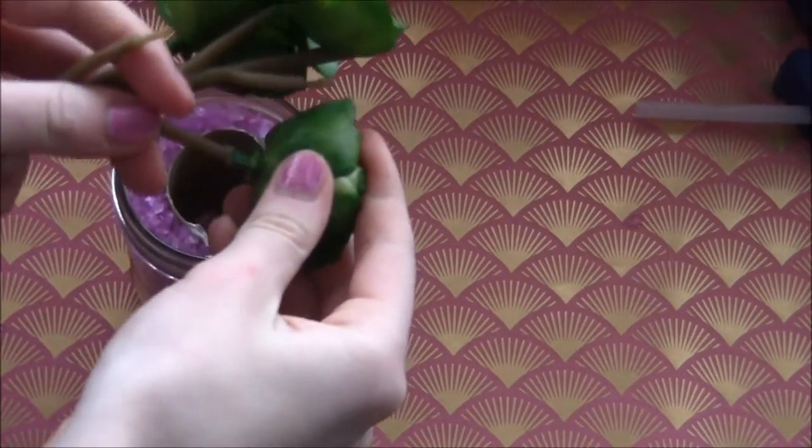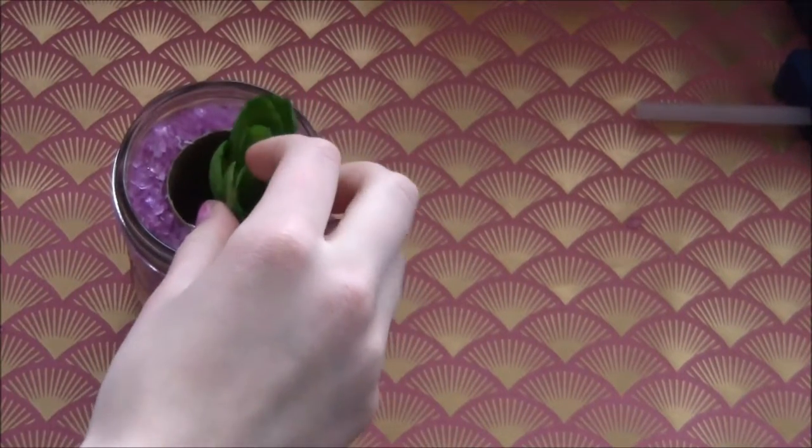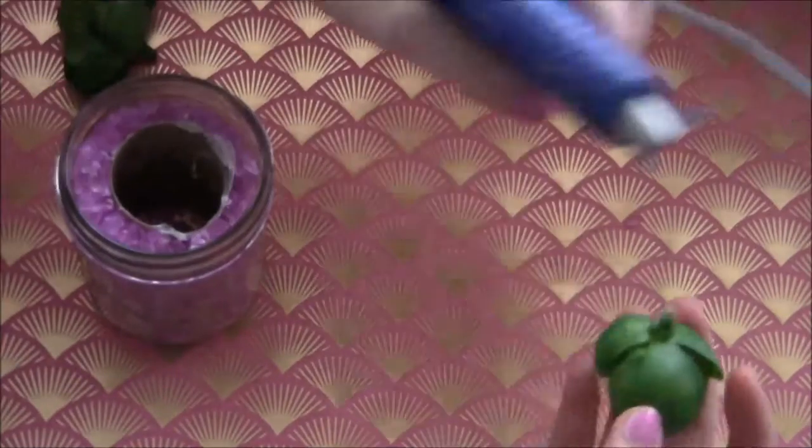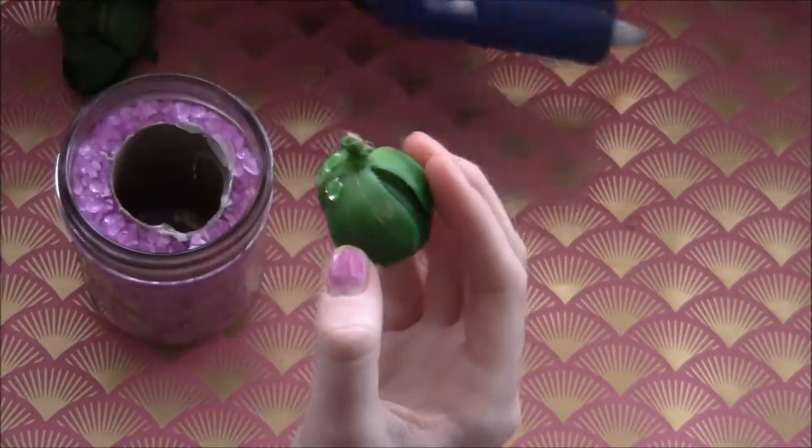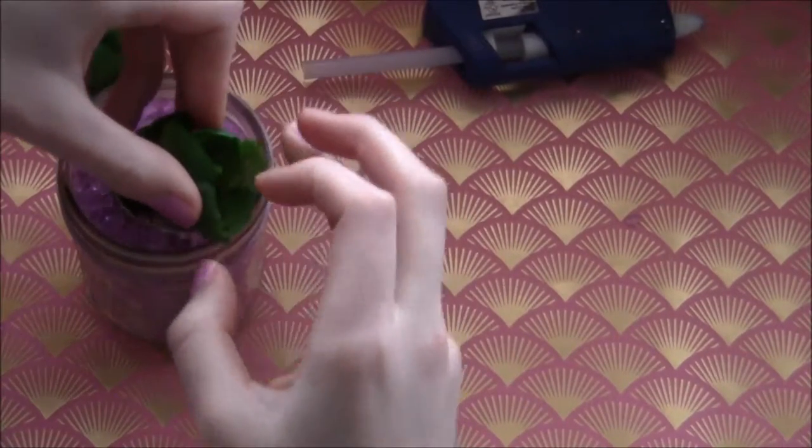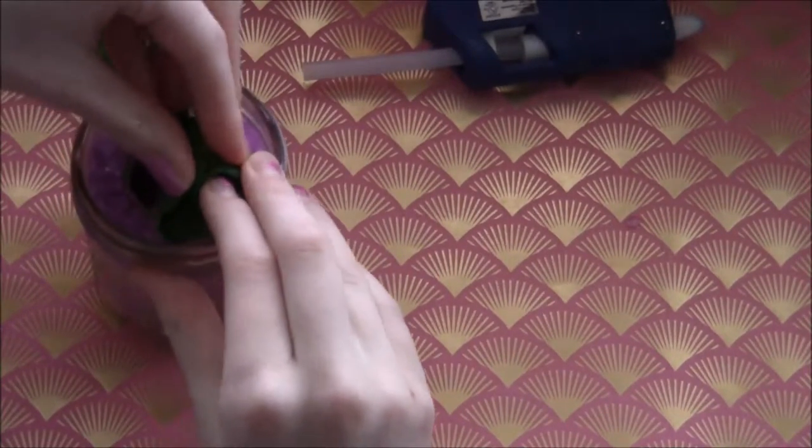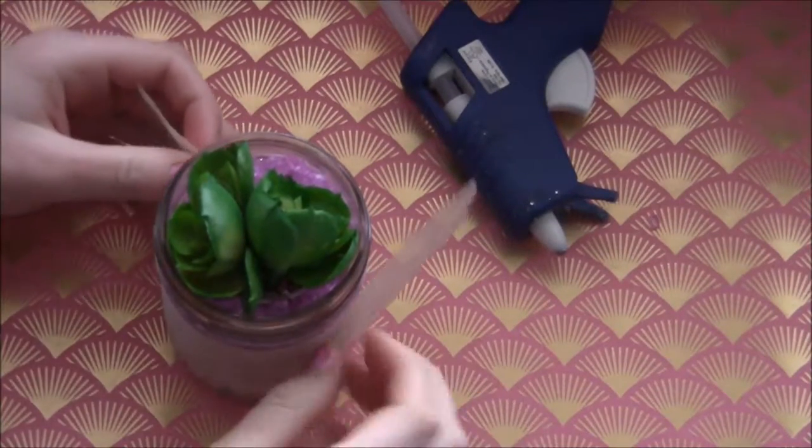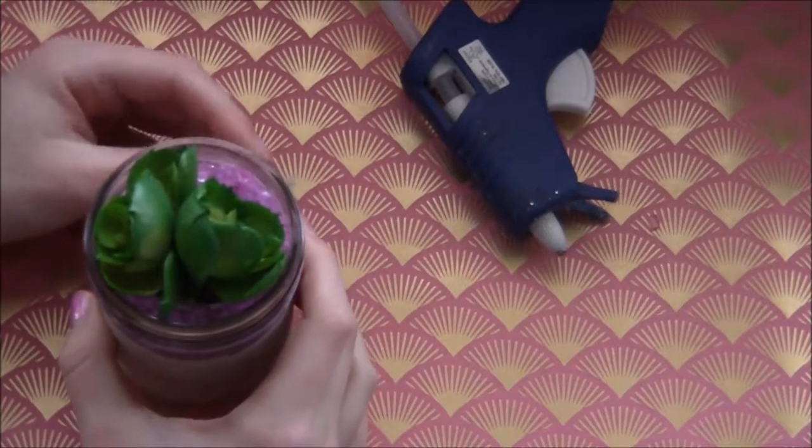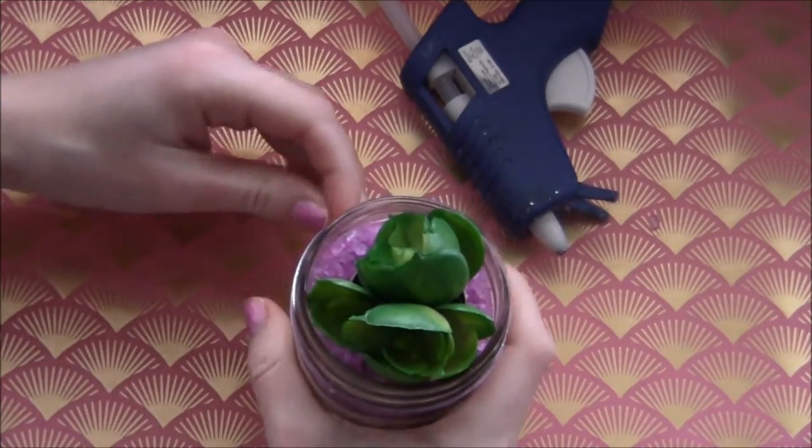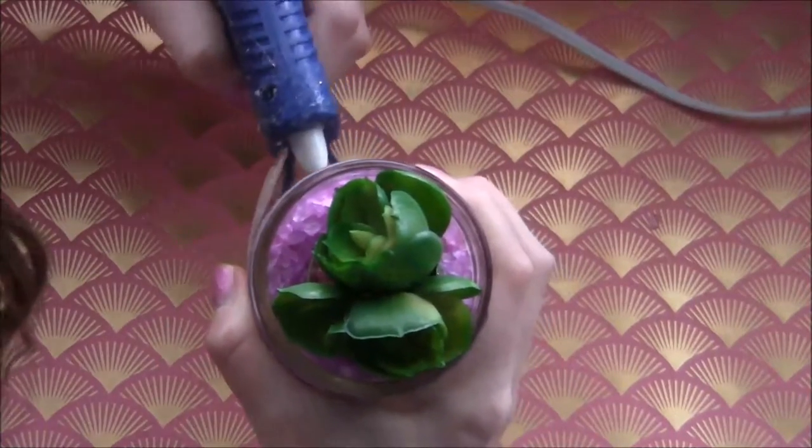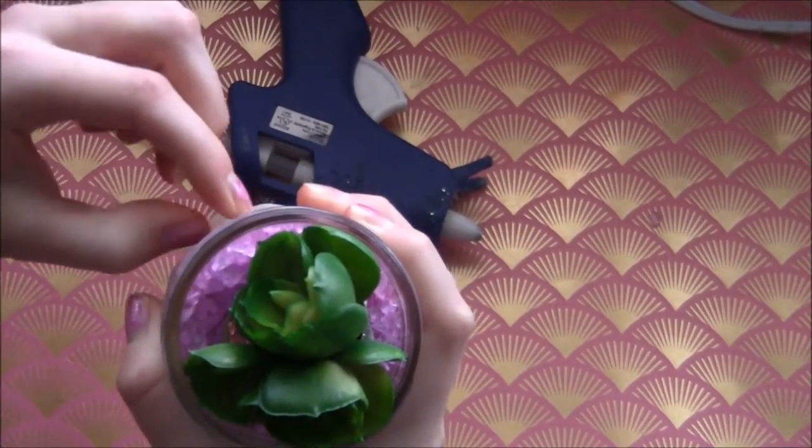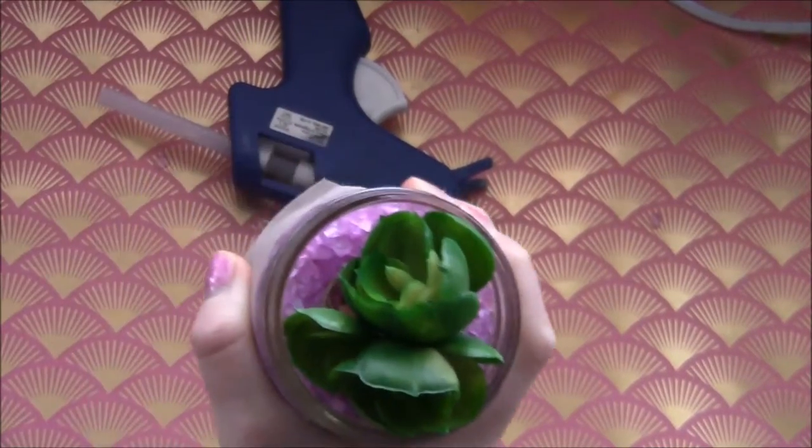Take some succulents and just arrange those in your jar. And just hot glue those in place. To make my jar look more pretty, I'm going to take some ribbon and I'm just going to glue that around the jar. I am gluing a piece of lace around my jar. And that's it. My jar is finished.